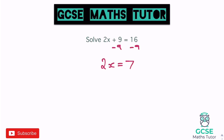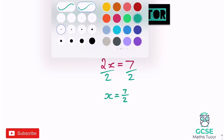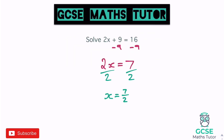We get 2x equals 7. You might notice that 7 doesn't divide evenly by 2, but that's fine — it just won't give a whole number. We divide by 2 anyway, giving x equals 7 over 2. That's fine to leave as a fraction, or you can write it as 3 and a half, or 3.5 as a decimal — whichever is appropriate for the question.